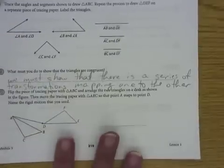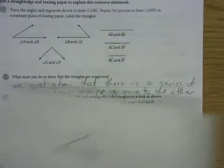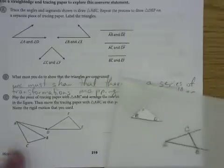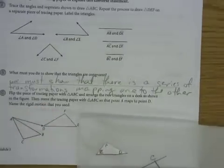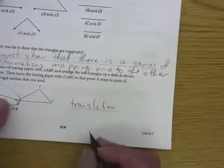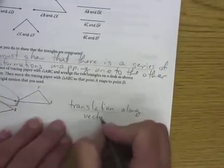It says to arrange the two triangles as shown in the figure. In Part C, move the tracing paper so that A maps to D. If you look at that, you realize that's a vector, and vectors are used in translations. So this is a translation — specifically, a translation along the vector AD. So then the triangles would look like this.